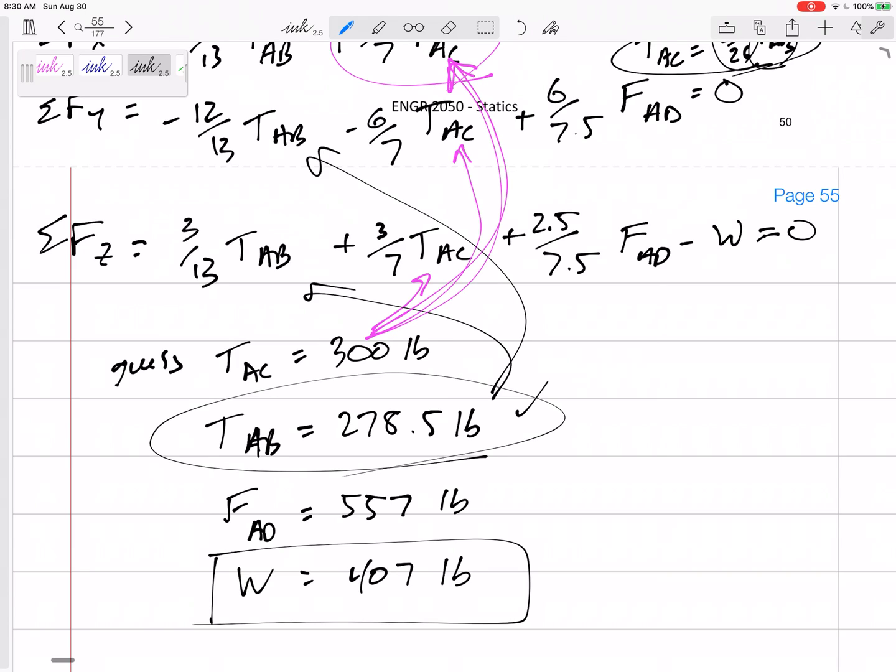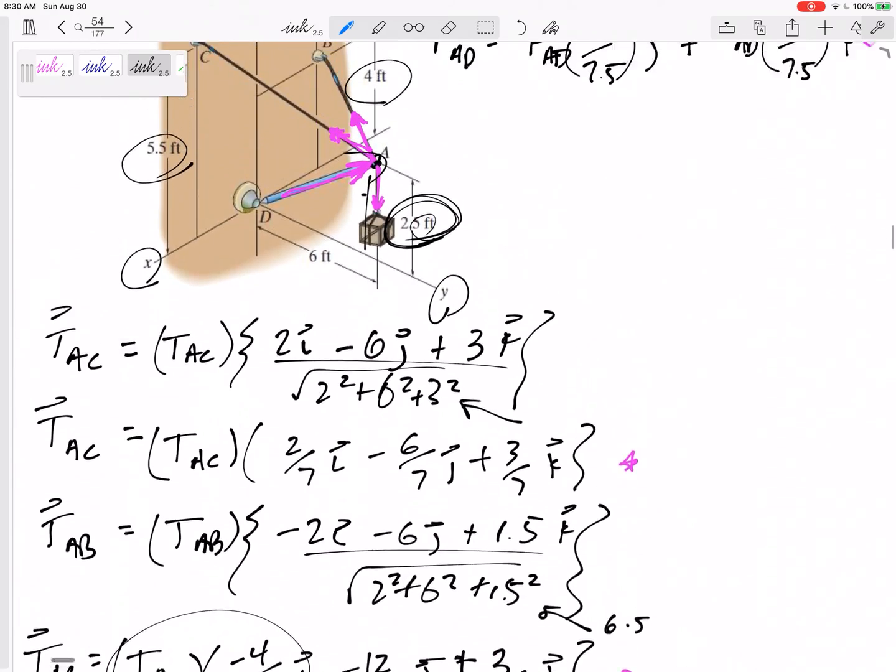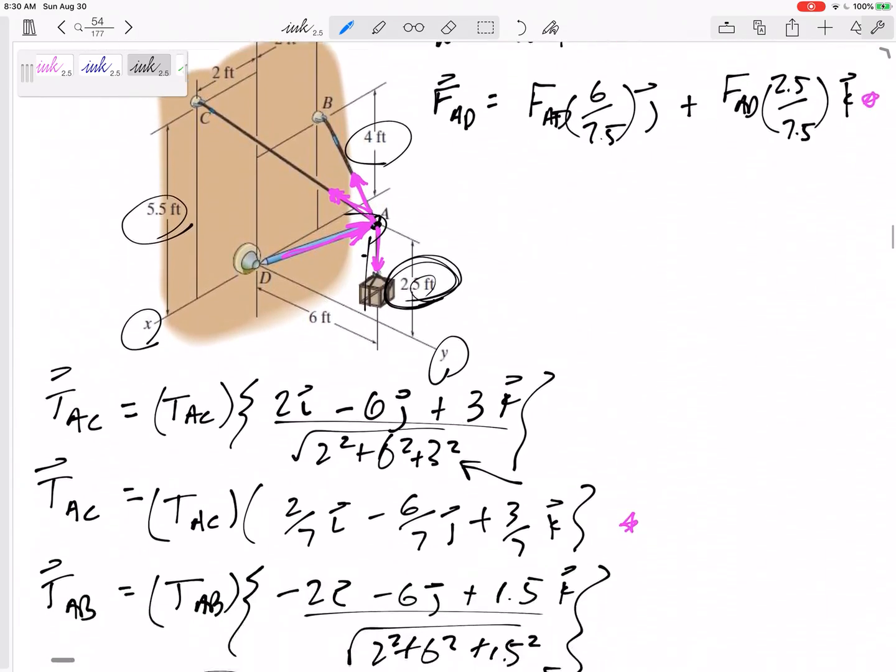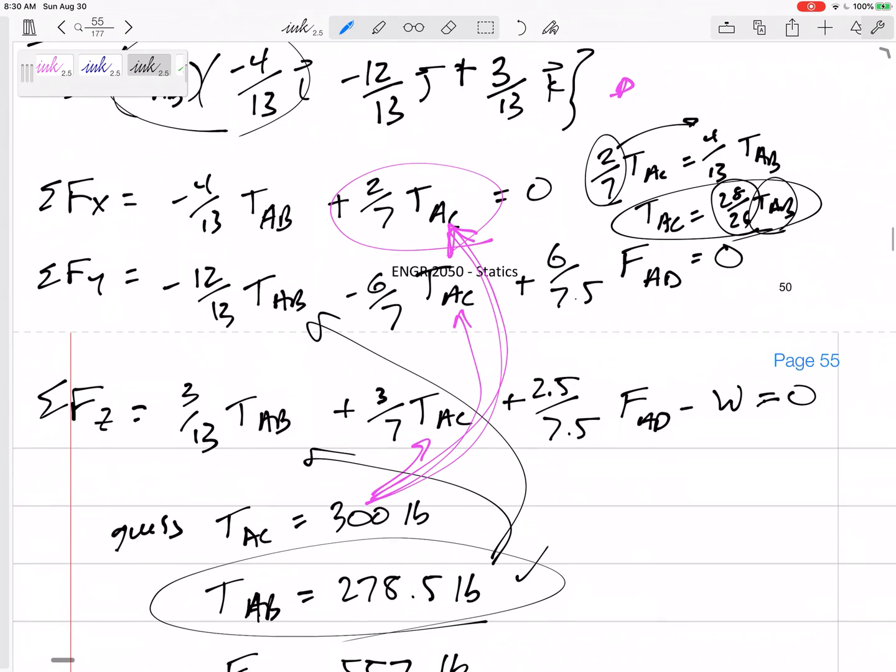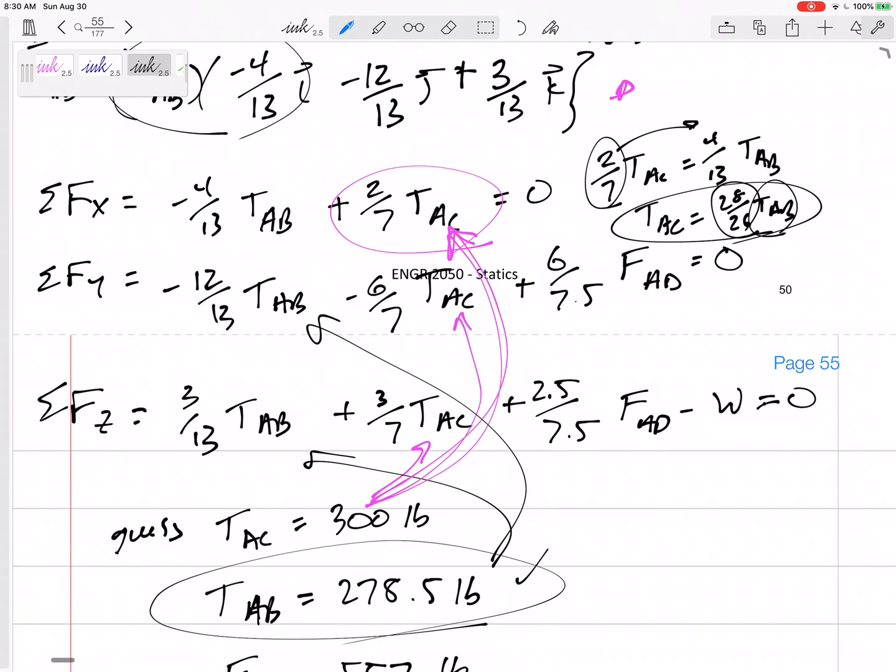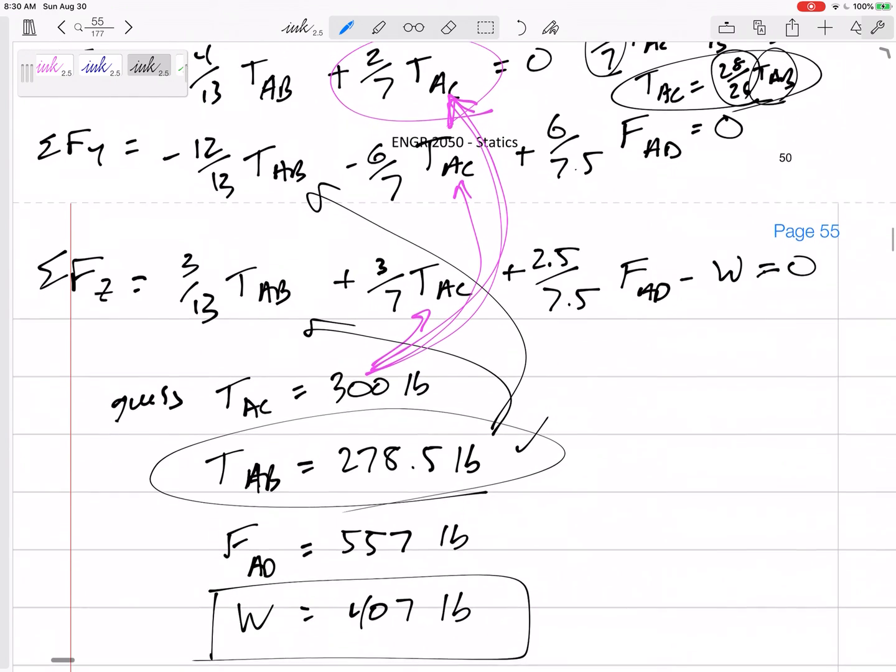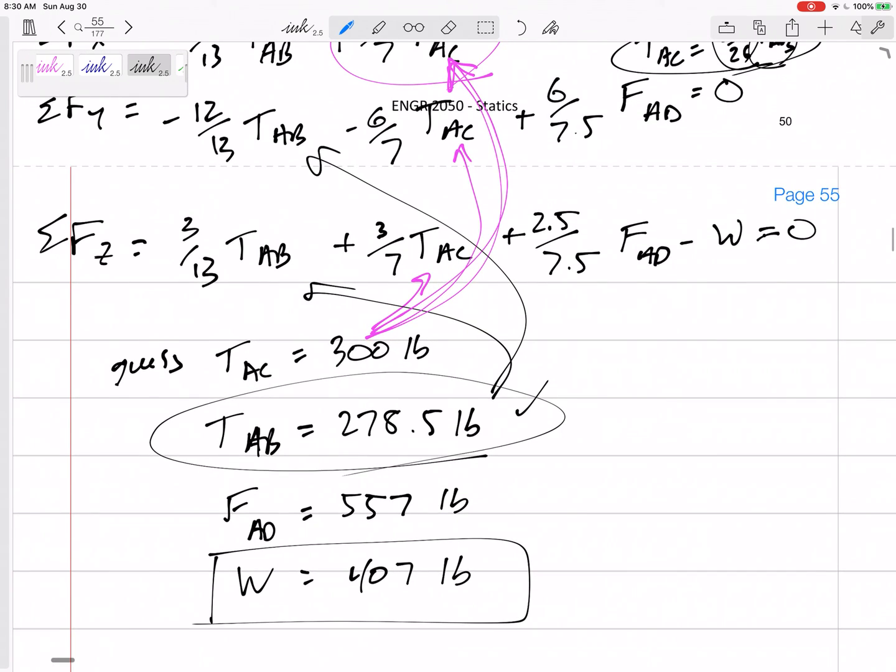So, this is another one of those problems. It's the maximum. But, what do we do? Break them into their components. Sum the forces in each direction equals zero. And, then solve for unknowns. And, with this one, you can just guess which one, not both of them, which one cable reaches its limiting factor. Plug it in. Solve for everything else. Make sure the other ones are not too high. And, then that is your answer. All right.